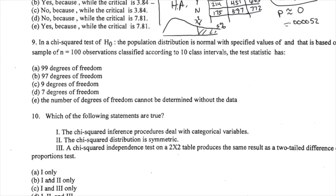Number nine is easy. This would be a goodness-of-fit test because you have 10 class intervals — the degrees of freedom is about the categories, not the observations. So it's n − 1 type, giving 10 − 1 = 9 degrees of freedom. Don't be fooled into thinking it's 100 − 1; in chi-squared, it's almost never sample size minus 1 — that's your t-test.